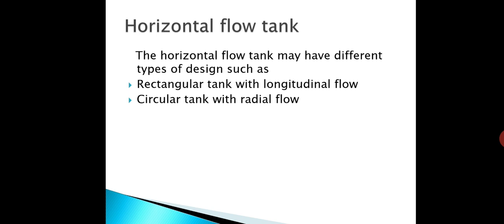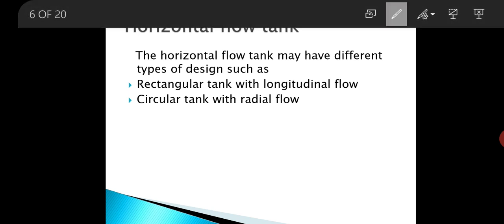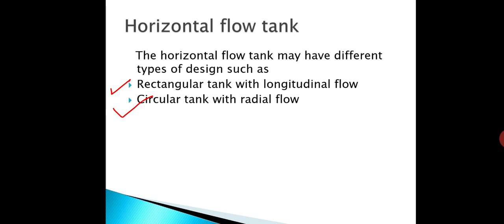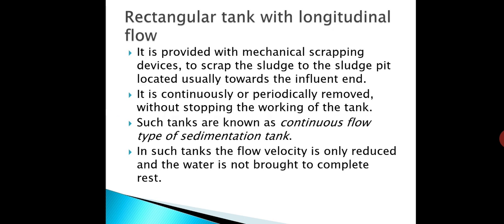This horizontal flow tank is further divided into two types: one is a rectangular tank with longitudinal flow, and the second one is a circular tank with radial flow. First, we will discuss about the rectangular tank with longitudinal flow.